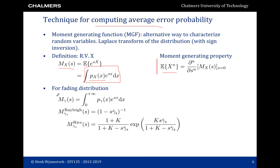We can apply the moment generating function to the fading distribution. For Rayleigh fading, the SNR is exponentially distributed, and because an exponential multiplied by an exponential has a nice closed form when integrated, we can compute the moment generating function for Rayleigh fading and Rician fading in closed form. For the Rayleigh fading case, the moment generating function has one parameter — the average SNR — with s as a variable. For the Rician distribution, we have two parameters: the average SNR and the K-factor, which tells us the balance in power between the line-of-sight and non-line-of-sight paths.